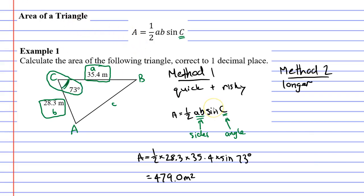So now we can take our formula area equals half a b sin c and we're just going to substitute these values in place of the letters. So half times a, a being 35.4, times b, b being 28.3. I'm running out of room so I'll go down the next line. Times sine of c, c being 73 degrees.